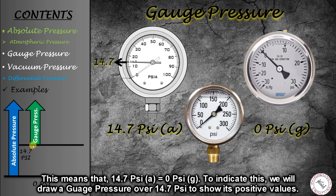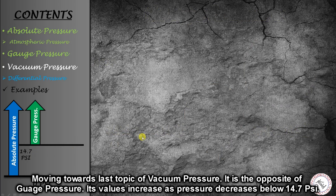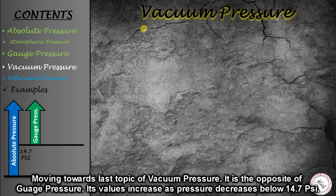If we draw a comparison graph, gauge pressure starts from 0 psi at the 14.7 psi absolute level, and goes in positive values upward. Below 14.7 psi absolute, gauge pressure goes into negative values. Now we introduce the third and last pressure measurement scale: vacuum pressure. Vacuum pressure is totally opposite to gauge pressure — starting from atmospheric pressure at 14.7 psi, as we go down, the value of vacuum pressure increases.